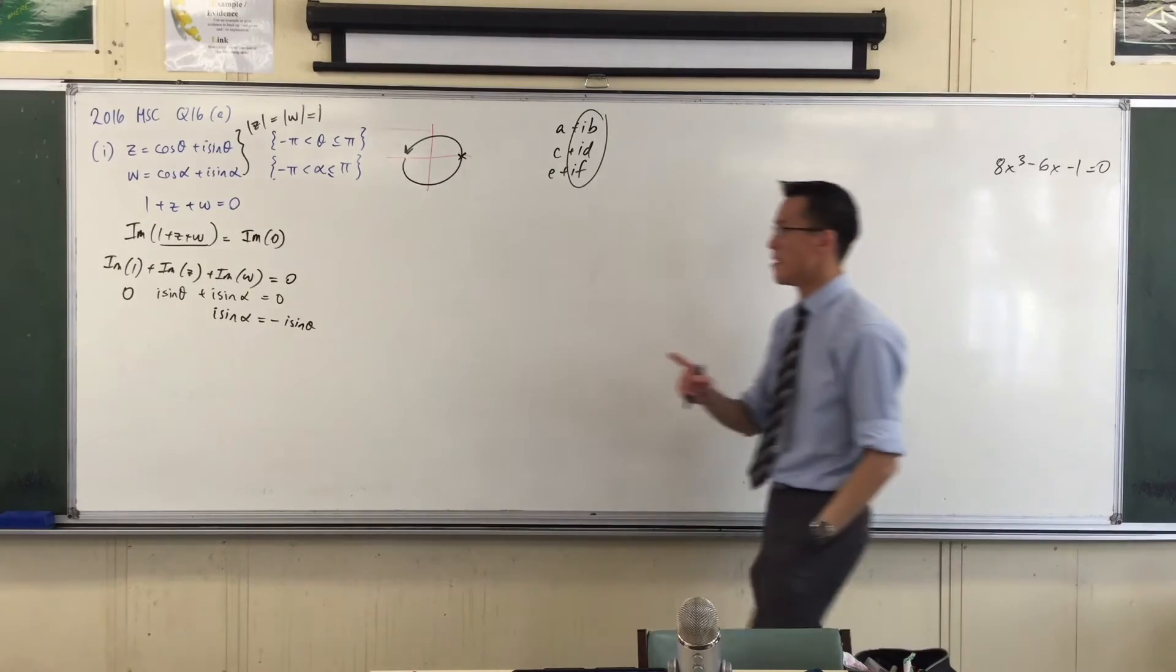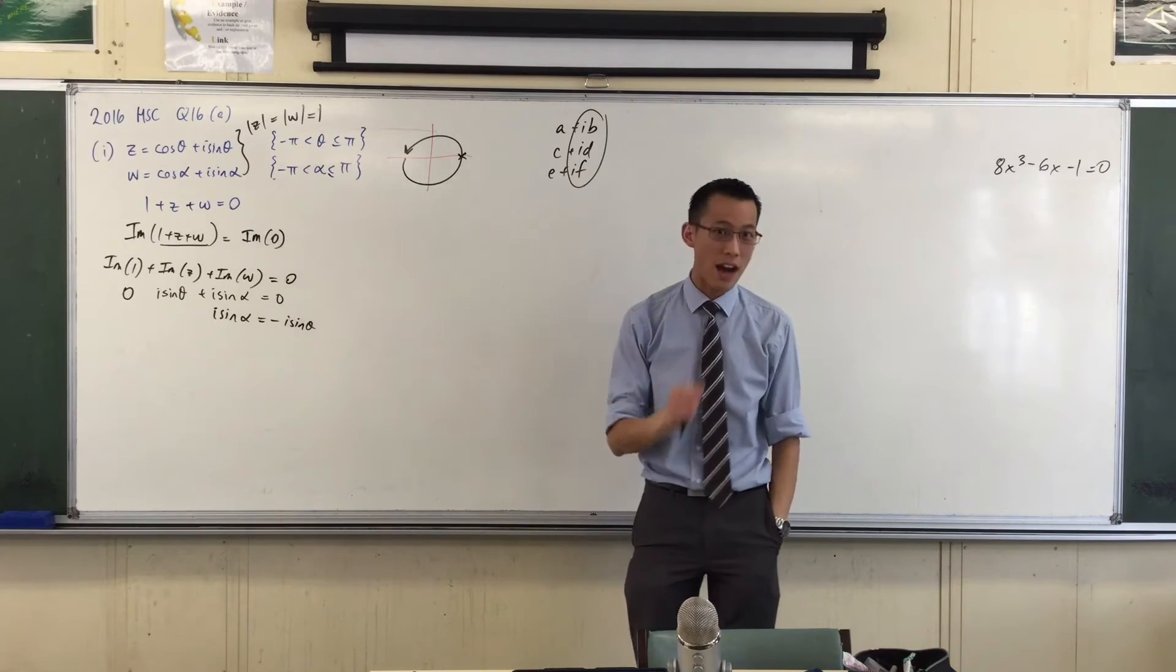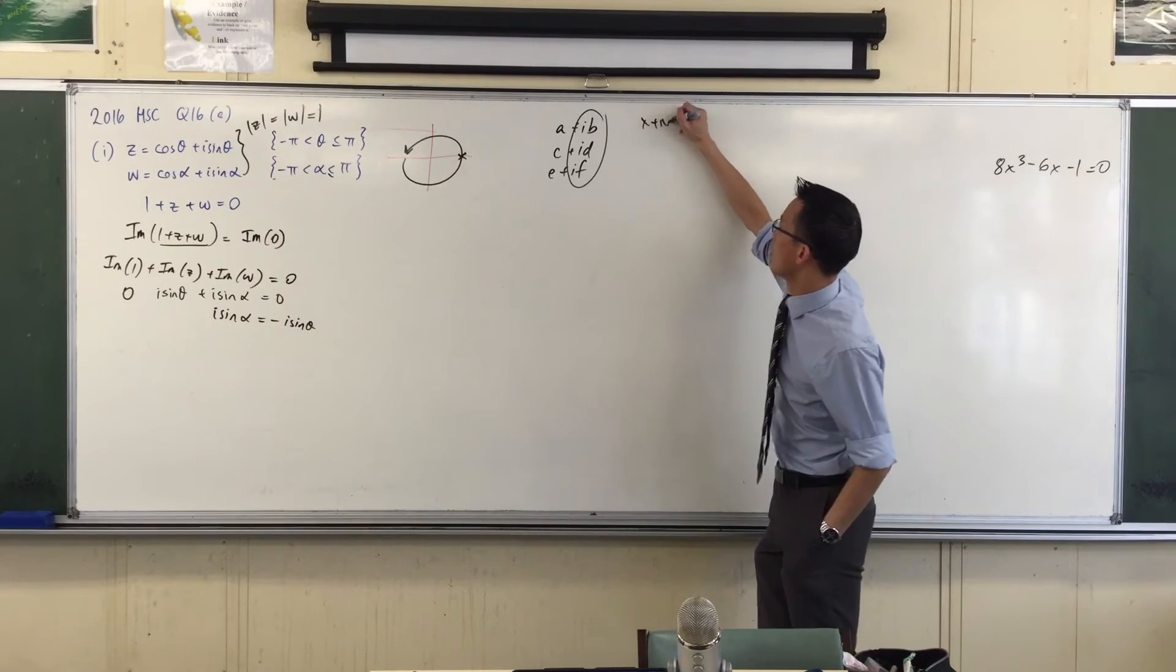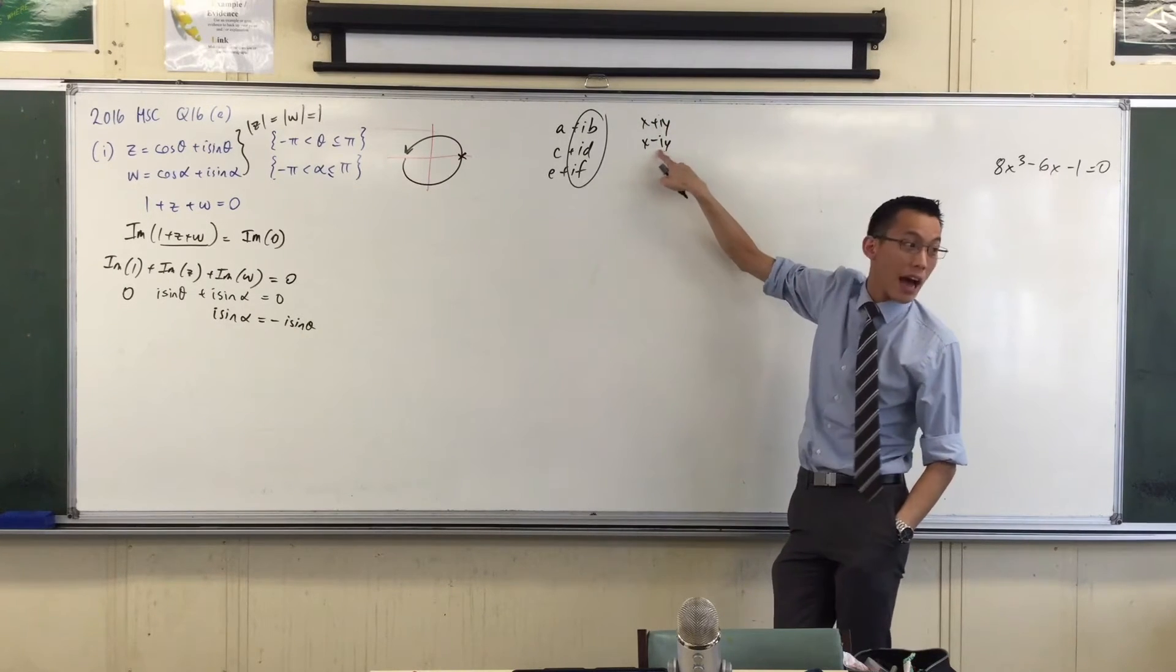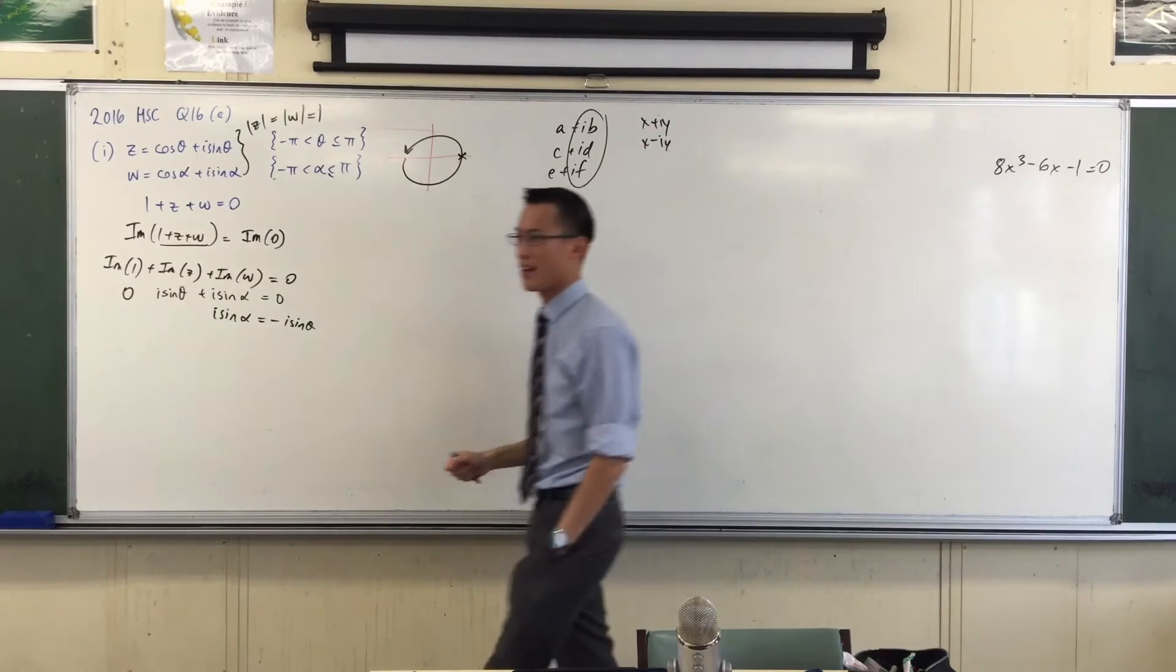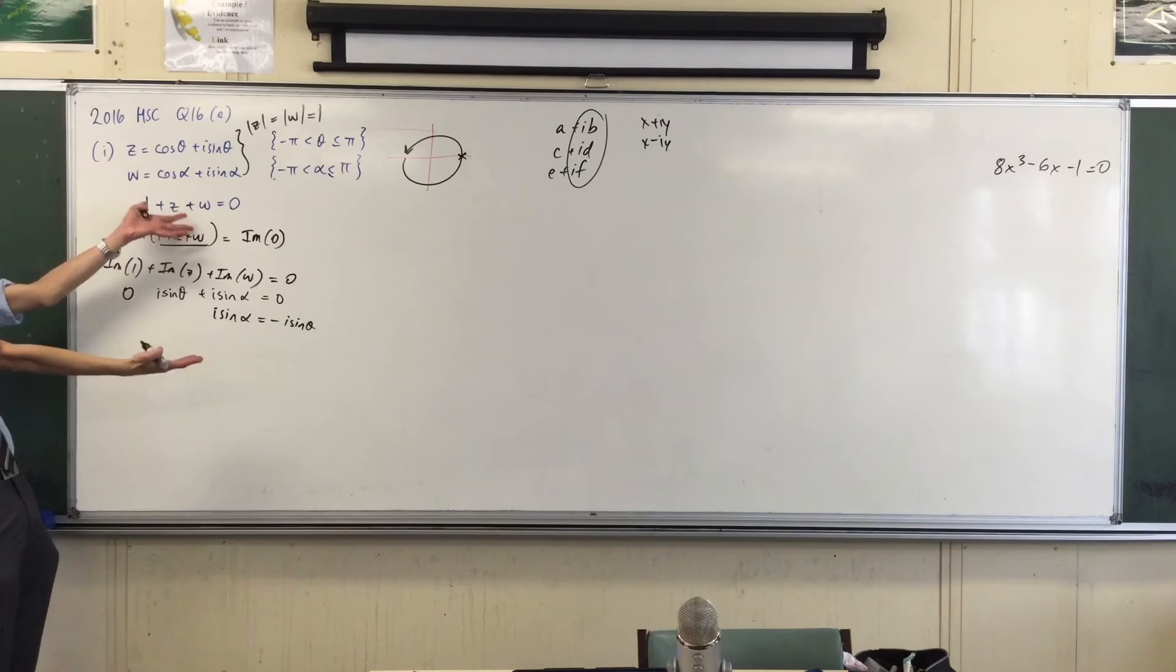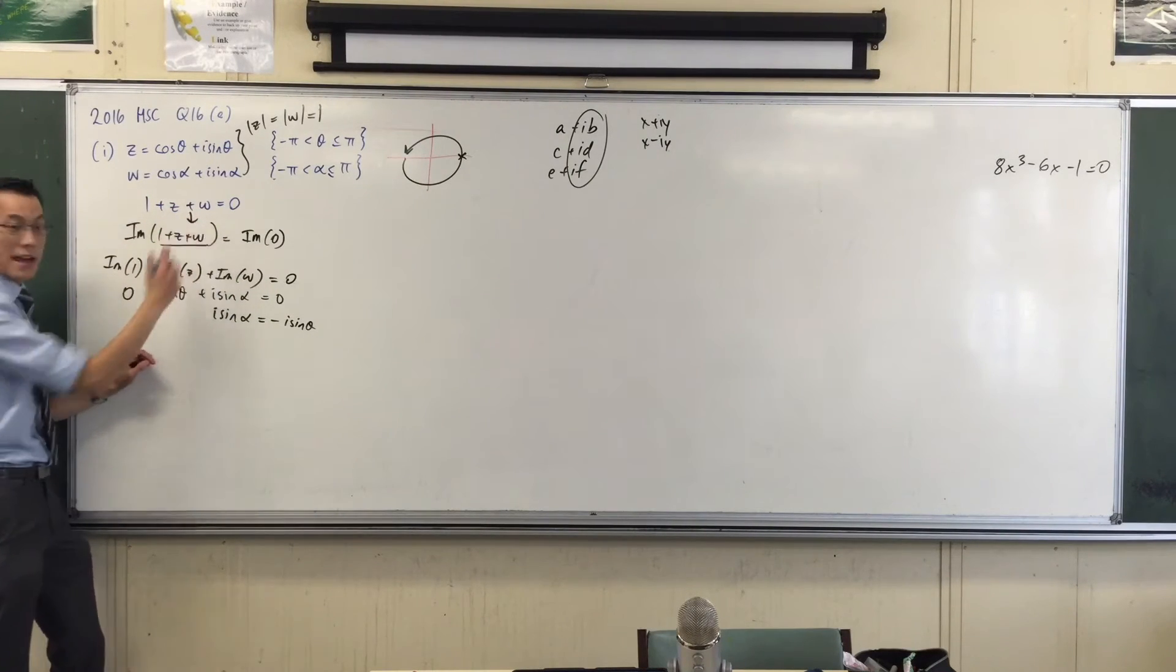I heard someone say that Z and W are complex conjugates. As it happens, Z and W are complex conjugates, but I don't know that yet. If I had a number like X plus IY, its complex conjugate is X minus IY. I've got the minus IY bit—they match up—but I need the real parts to be the same. How am I going to reach for something like that?